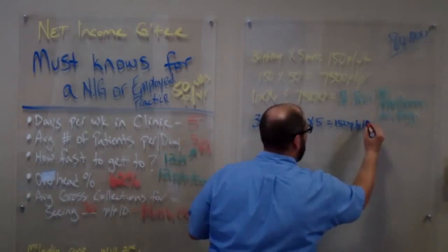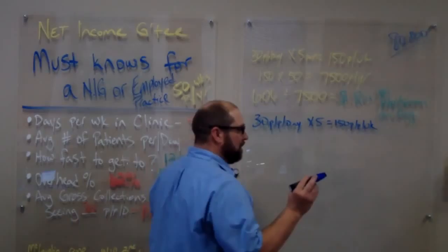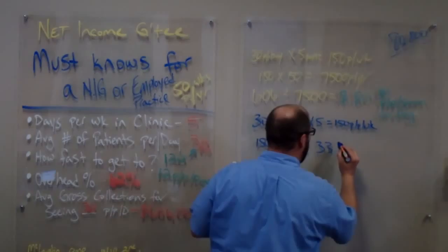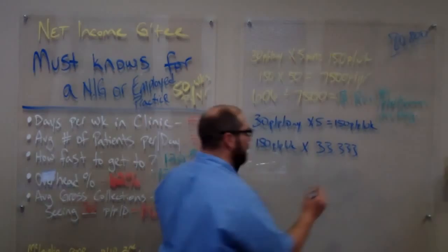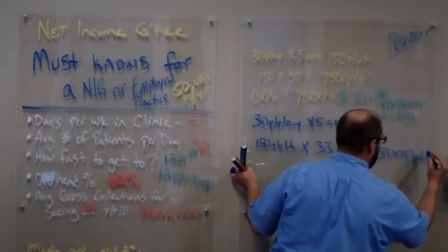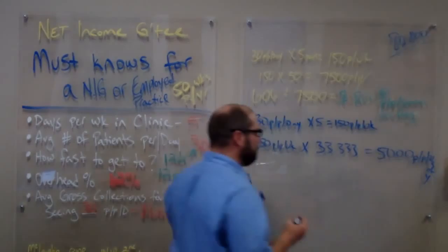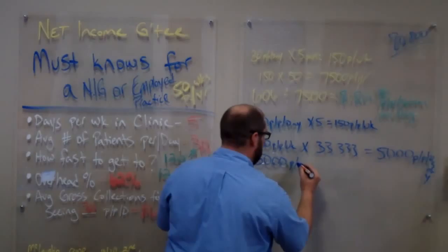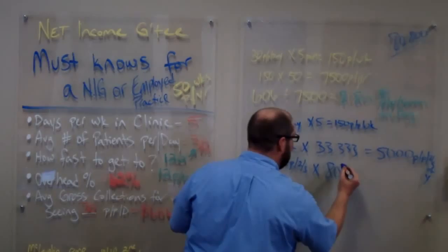So now we have 30 patients per day. We have 30 patients per day times 5 days a week equals 150 patients per week. Now, because we're doing two-thirds of the year, we take 150 patients per week and we multiply it by 33.333, which is two-thirds of the year. And we come up with basically 5,000 patients per two-thirds of the year.